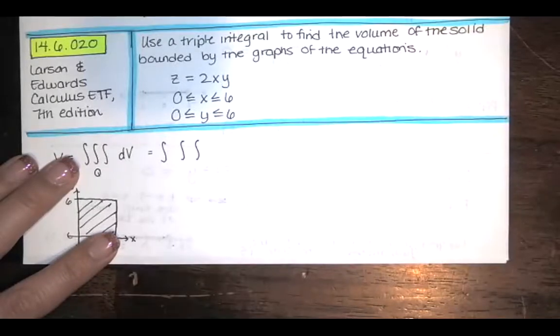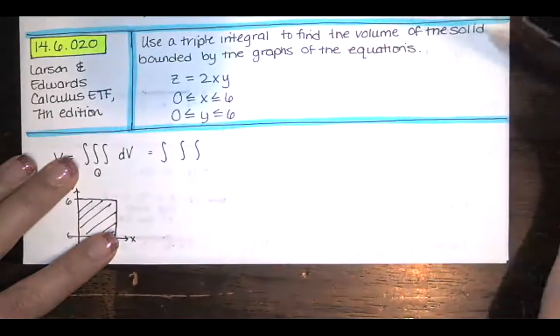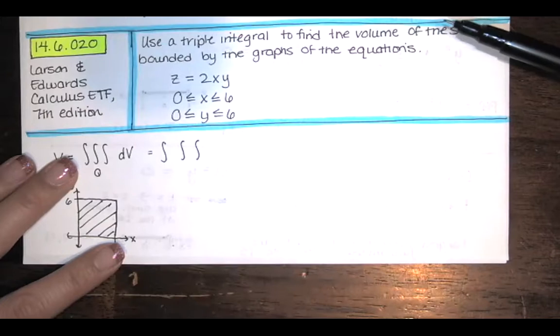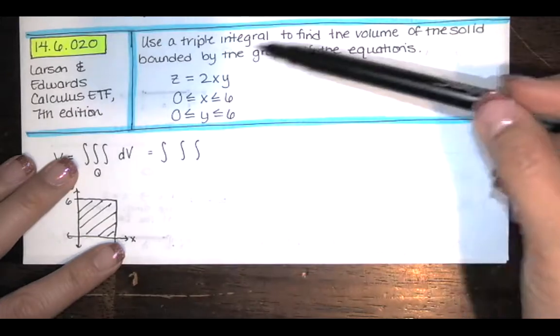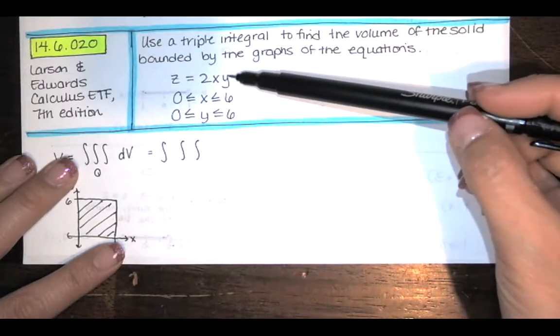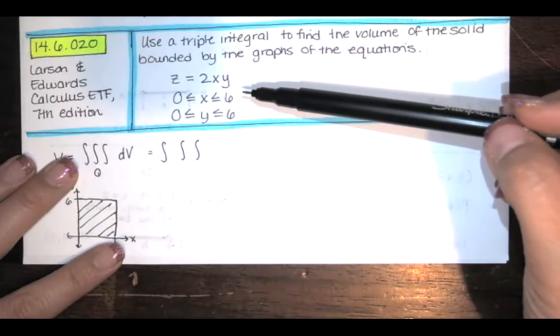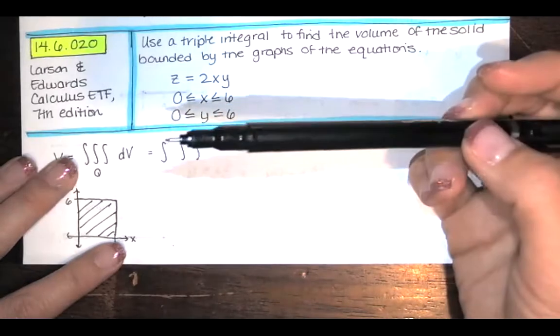In this video, we solve problem 14.6.020 from the Larson and Edwards Calculus Early Transcendental Functions text, 7th edition. We're asked to use a triple integral to find the volume of the solid bounded by the graphs of the equations. We have z equals 2 times x times y, and we're told that x ranges between 0 and 6, and y ranges between 0 and 6.